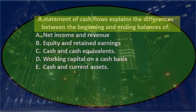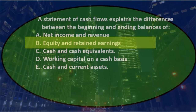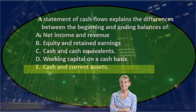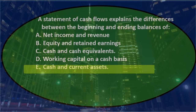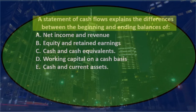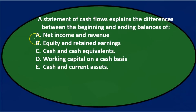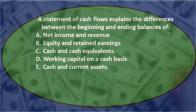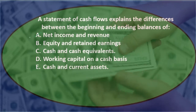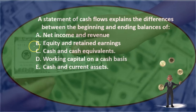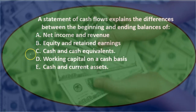Question 2: A statement of cash flows explains the differences between the beginning and ending balances of — A) net income and revenue, B) equity and retained earnings, C) cash and cash equivalents, D) working capital on a cash basis, or E) cash and current assets.